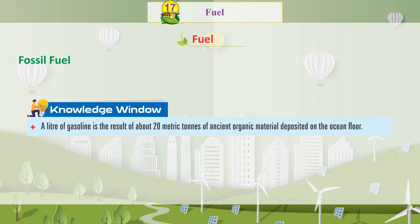Knowledge window: A litre of gasoline is the result of about 20 metric tons of ancient organic material deposited on the ocean floor.